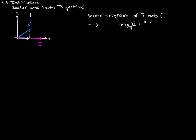u dotted with v divided by the magnitude of v — we're going to multiply that by the unit vector v divided by its magnitude. If I simplify that — and this is actually much more common the way you'll see this written — you get u dotted with v divided by the magnitude of v squared, times the vector v.